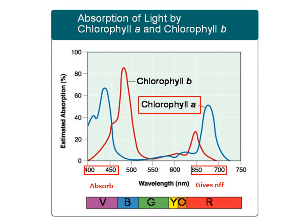This shows the actual wavelength energy that is being absorbed when we do this experiment. What is being absorbed is wavelength 400 to 450. What is going to be given off is wavelength 650 to 700. Therefore, what you see is going to be red.